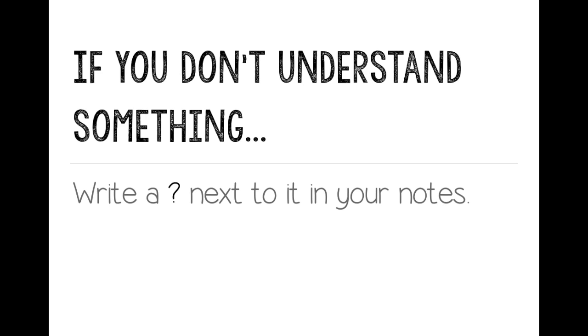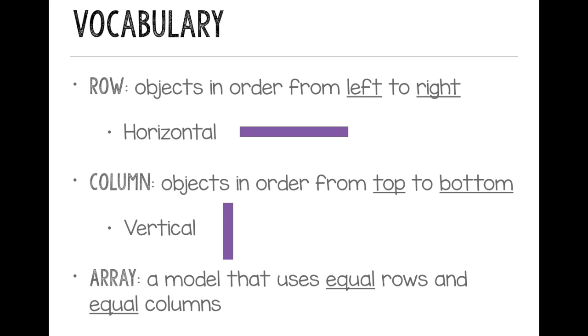And remember, if you don't understand something, write a question mark next to it in your notes. Let's start by going over our vocabulary words. Our first word is row, and a row is when you have objects in order from left to right. It's the same thing as being horizontal.